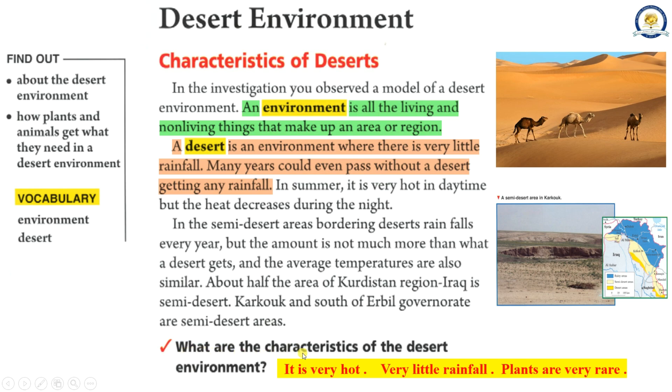What are the characteristics of the desert environment? It is very hot. Very little rainfall. Plants are very rare.